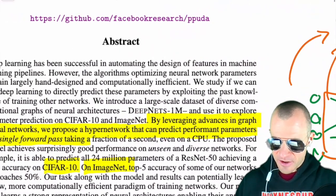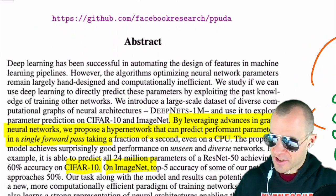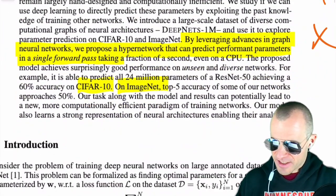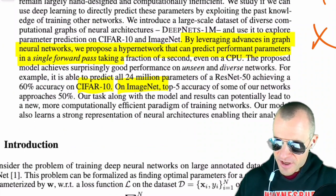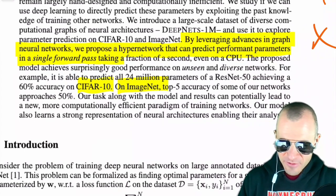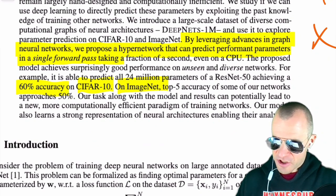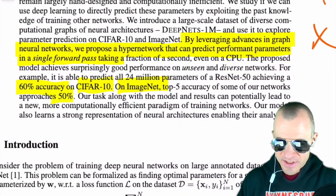On CIFAR-10 you reach 60% accuracy, and on ImageNet you reach 50% top-five accuracy. These are respectable numbers — better than random — but way below what you'd get by actually training a network. Was this your intention, or is it still surprising that you get these good numbers?